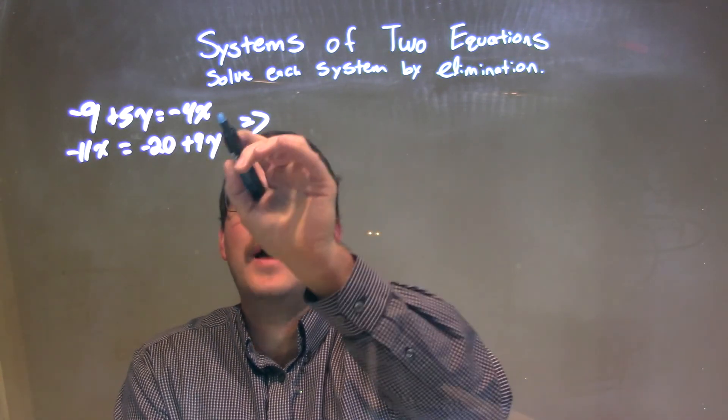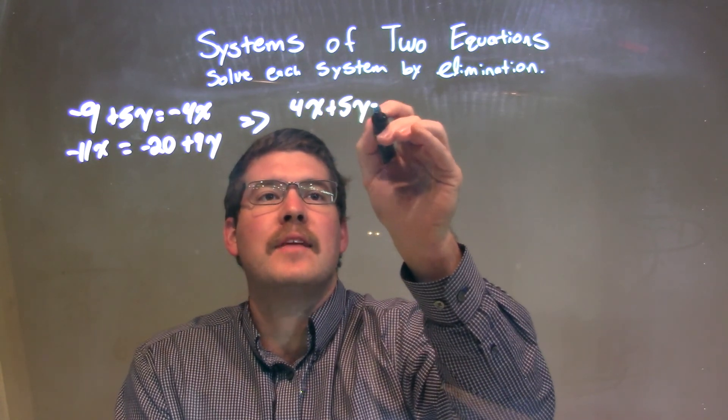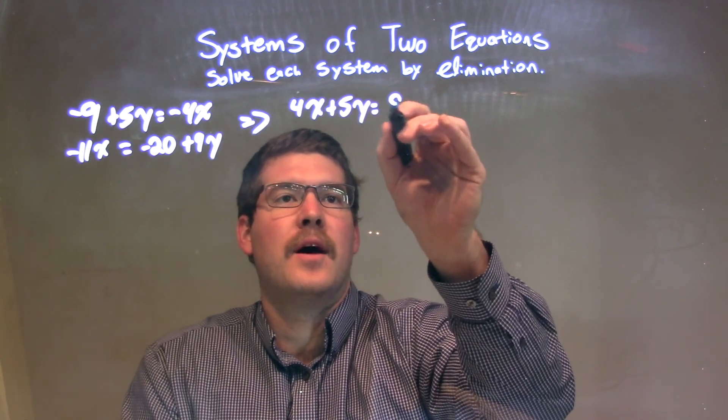I'm going to add 4x to both sides, so we have positive 4x plus 5y, and that's going to be equal to, if I add 9 to the other side, positive 9.